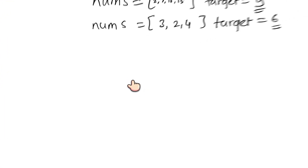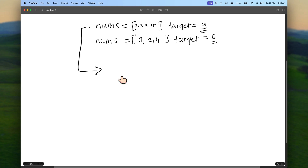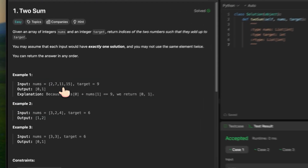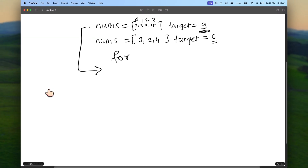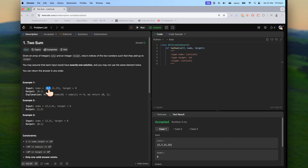To keep things clear, I added those examples and I'll walk through with this example. We have indices zero, one, two, three — three indices total — and we need to find the pair that sums to nine. I'll be writing a for loop and using a key-value pair approach. I'll enumerate the nums array: for k, v in enumerate(nums), then print k and v to see what we get.